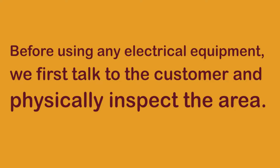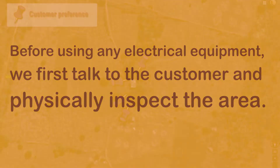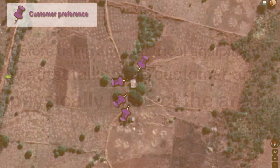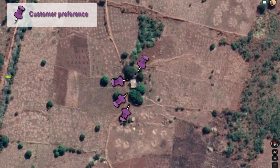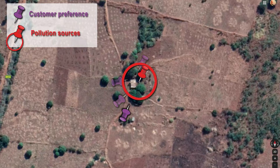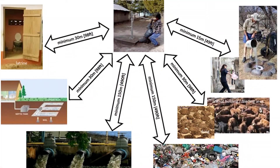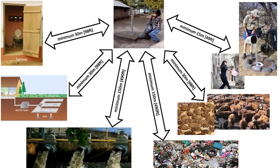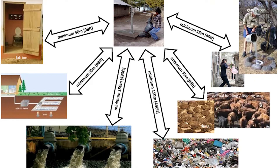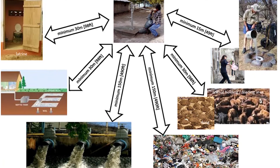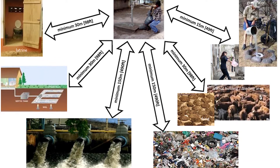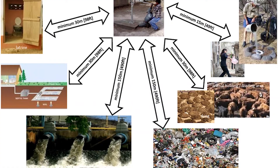Before using any electrical equipment, a good borehole siter will first talk to the customer and physically inspect the area. The customer will probably show you a few preferred places to drill. Look for possible sources of pollution and exclude some preferred locations if needed. A borehole must be at least 30 meters from latrines, septic tanks and animal shelters, and at least 150 meters away from garbage dump sites and industrial water processing plants.